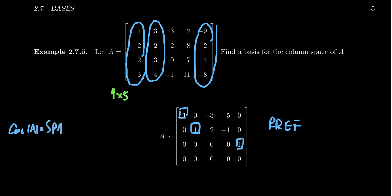it'll be spanned by the vectors one, negative two, two, and three. Three, negative two, three, and four. And then the last one here, negative nine, two, one, and negative eight.